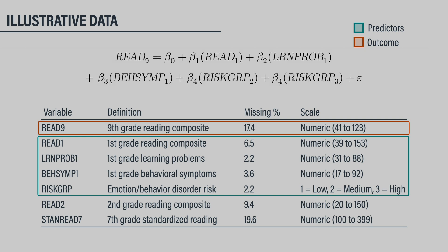The focal analysis is a multiple regression where 9th grade reading achievement is predicted by three continuous predictors measured in first grade, along with a multi-categorical risk status variable represented as a pair of dummy codes. The analysis also incorporates two auxiliary variables: 2nd grade reading scores and a measure of standardized reading taken at the 7th grade.